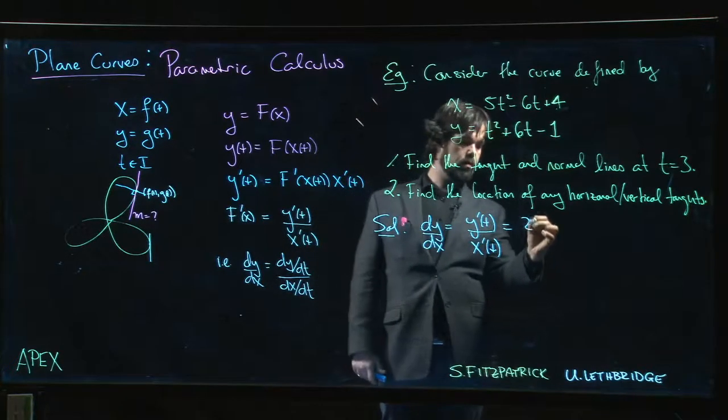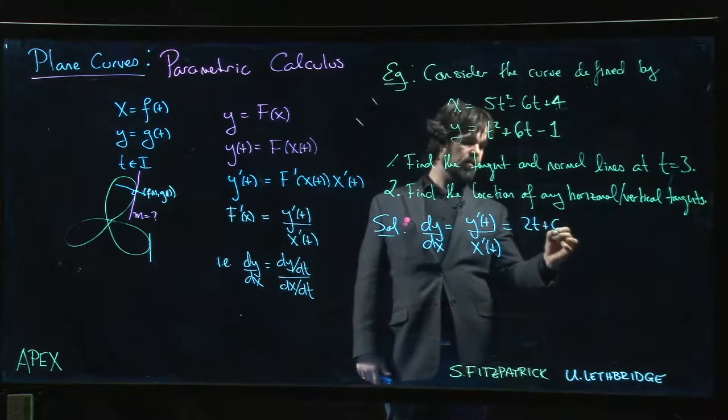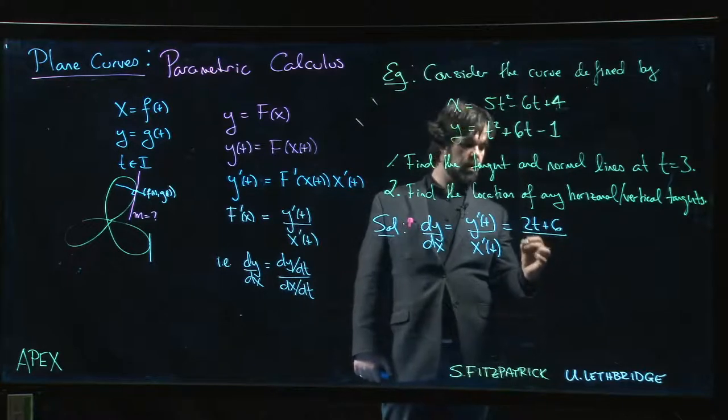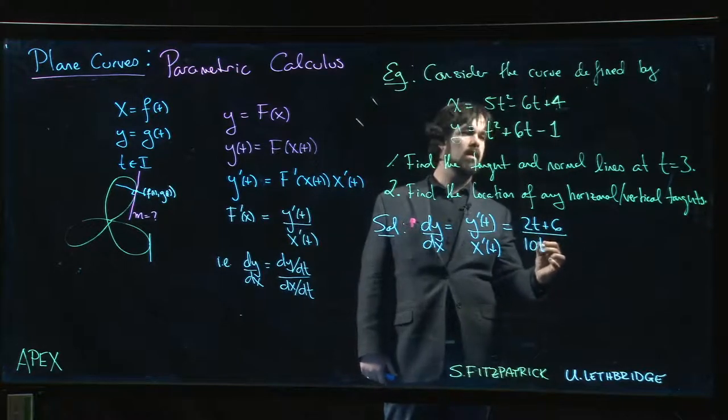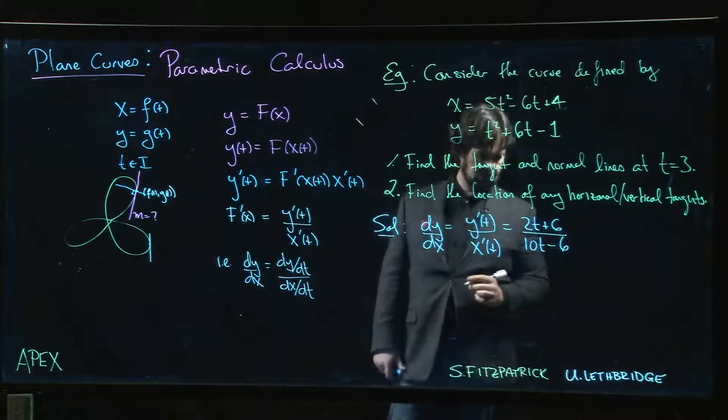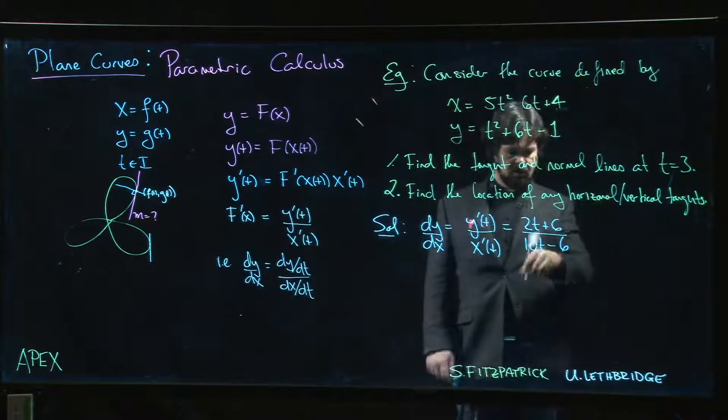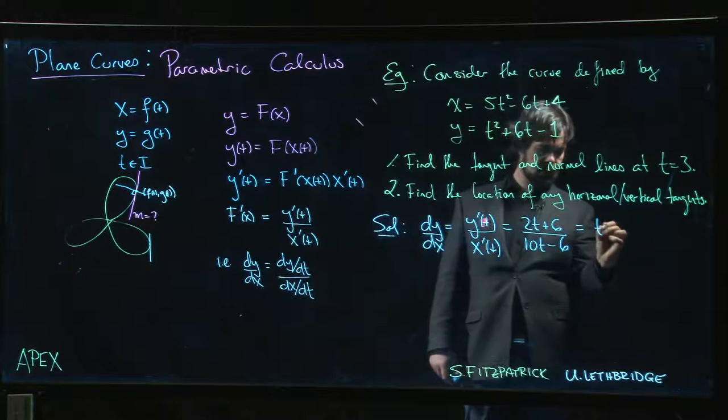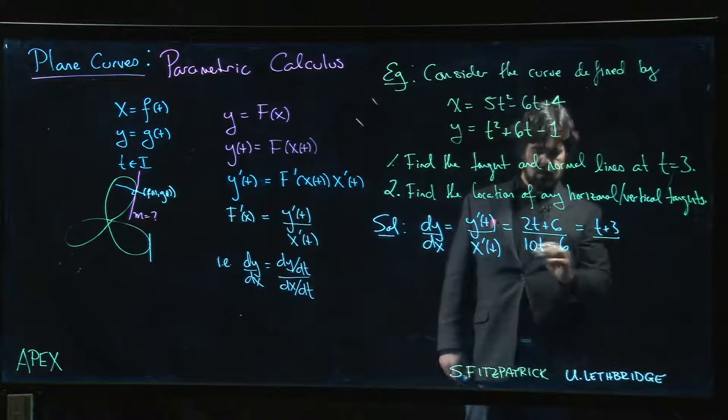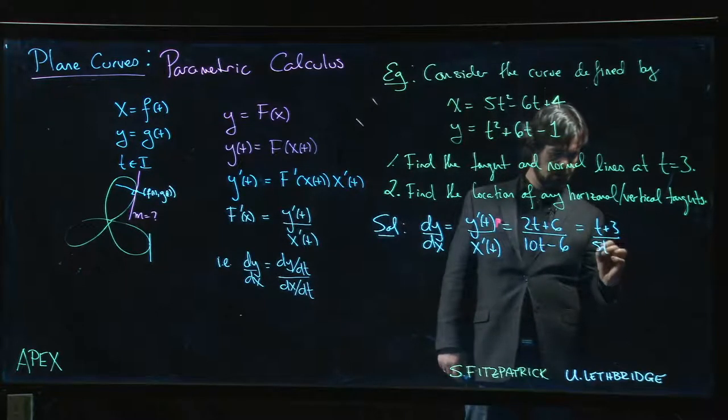So we get 2t plus 6 divided by 10t minus 6. Okay, everything is even here. If you want to divide everything by 2, we can write that as t plus 3 divided by 5t minus 3.